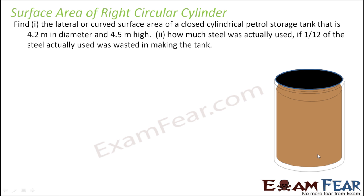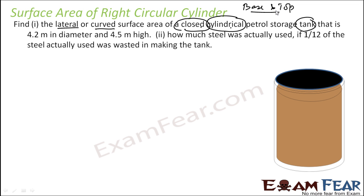Please pay attention here — this is a little tricky question. You have to find the lateral or curved surface area of the cylindrical petrol storage tank. Sometimes they use the word 'lateral' here as well. When you see 'lateral' or 'cylindrical surface area,' they mean the curved surface area. It is a closed cylindrical tank, which means we have both a base and a top. The diameter is 4.2 meters, so the radius is 2.1 meters, and the height is 4.5 meters.